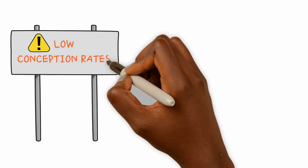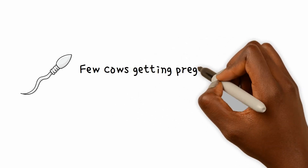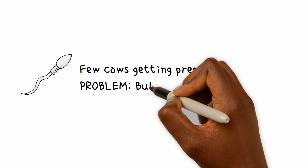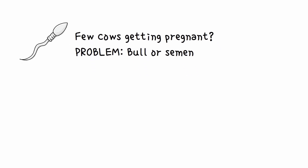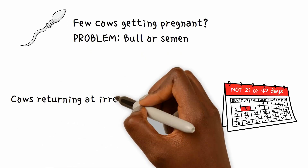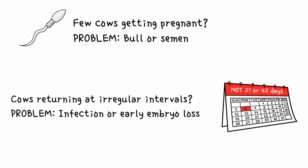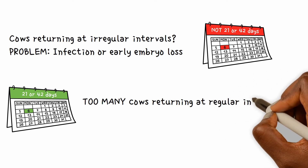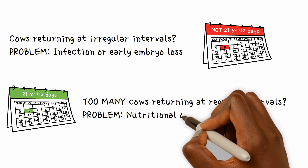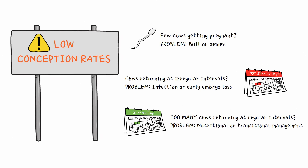The causes of poor conception rates can come from a range of different causes. For example, if very few cows are getting pregnant and are all returning with normal cycles, then the most likely problem is either with the bull or the quality of semen from AI. If some cows are returning but at irregular intervals — not at 21 or 42 days — then the most likely cause is some form of infection or early embryo loss. If too many cows are returning at regular intervals, at 21 and 42 days, then the most likely problem is nutritional or a transitional management problem.